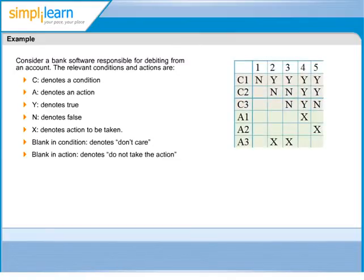Now let us look at the decision table with conditions C1, C2, C3, and actions A1, A2, A3 represented by rows in the table. It has five permutations represented by columns 1 through 5.